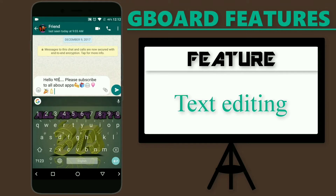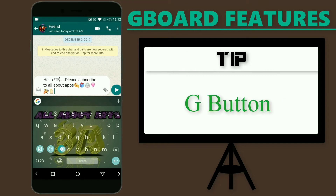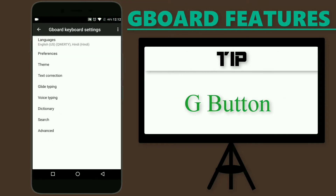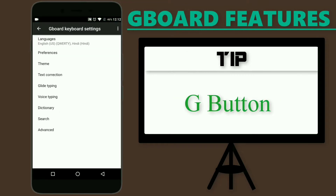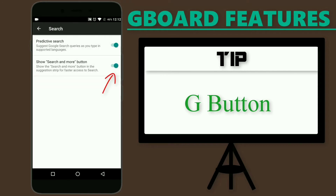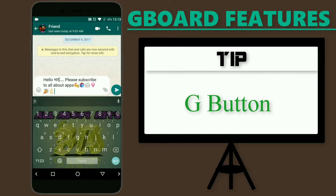There are a lot of features associated with the G button. If by any chance the G button doesn't look good to you, go to settings, select the 'Search' option, and deselect 'Search and more button.' Once you do this, you will see an arrow instead of the button. Frankly speaking, this arrow looked better to me than the button itself, though I wouldn't consider this a feature — just letting you know.